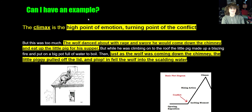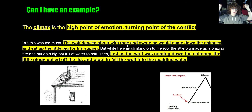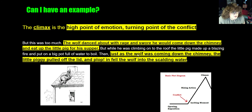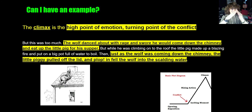Next we get to the climax of the story — the high point of emotion and the turning point of the conflict, the top of our mountain. The wolf is super angry — he danced about with rage — so we know it's a really high emotional point. He decides he's going to climb down the chimney. As the wolf is coming down, the pig pulls the lid off a boiling pot of water and the wolf falls in. The pigs and the wolf come to direct conflict — do or die, quite literally. The wolf falls into the boiling pot, so we think the pigs are going to win. That is the climax of the story.